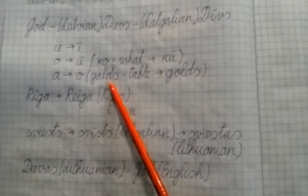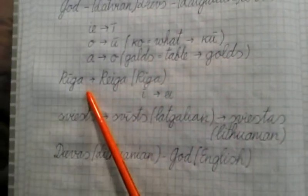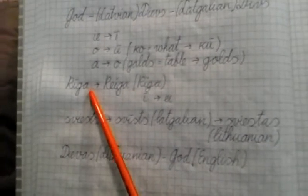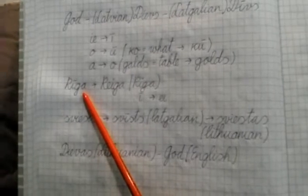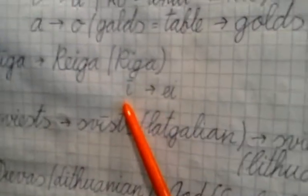For example, gold's table becomes Latgalean golds. It's not gold, but golds table. Rīga in Latvian language, capital of Latvia becomes Latgalean reiga. In English it's Riga. Latvian e becomes Latgalean a.